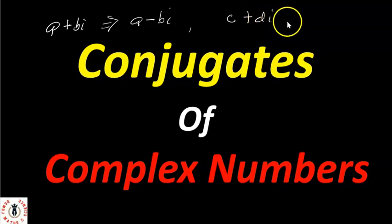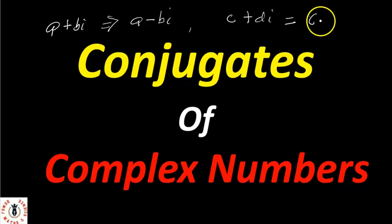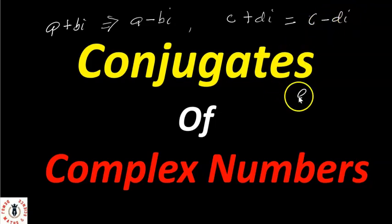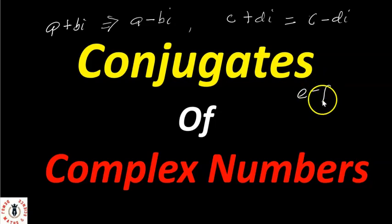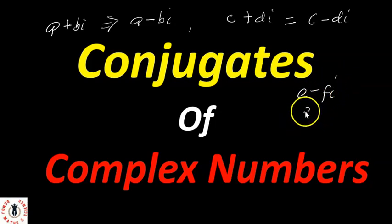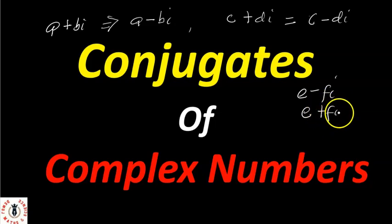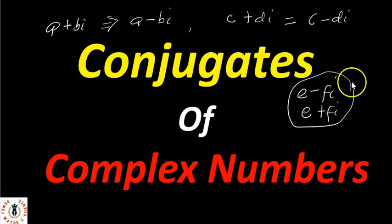Now if I have c + di, the conjugate of c + di will be c - di. And if I have e - fi, the conjugate of e - fi will be e + fi. With this, I will now apply this to the division of complex numbers.